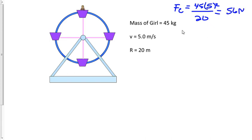Next, we need the force of gravity acting on the girl. The force of gravity is just her mass multiplied by 9.8, and that equals 441 newtons.